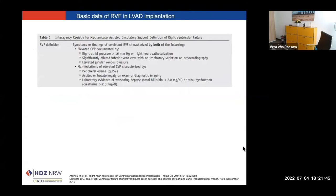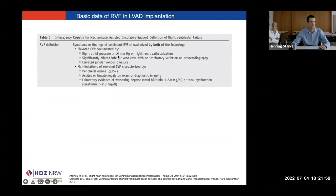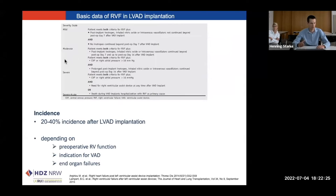The right ventricular failure is defined according to the INTERMIX criteria: you need an elevated CVP, whether measured by catheter or seen clinically, and additionally a clinical sign of elevated CVP, like peripheral edema or ascites, plus abnormal laboratory results. It is divided into mild, moderate, and severe stages, depending mostly on the onset, duration, and the need for therapies to manage the right ventricular failure. Looking at the literature, as well as our center, incidences of 20% to 40% are found in patients undergoing LVAD implantation. Right ventricular failure depends on the preoperative RV function, the indications for the VAD, and any pre-existent end-organ failures.